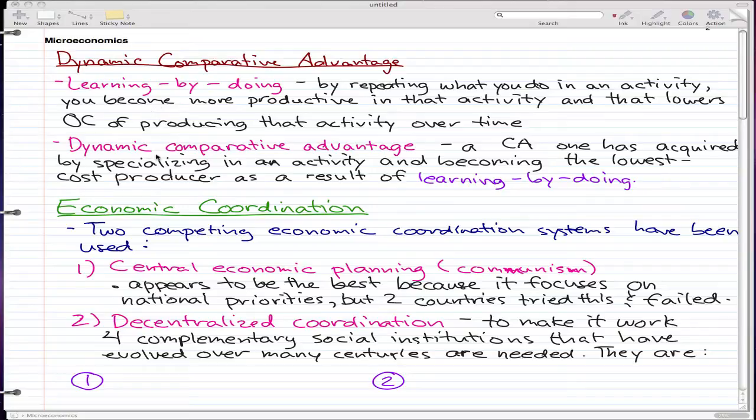We're going to start with two definitions: learning by doing and dynamic comparative advantage. Learning by doing is where we're repeating what we do in an activity, and because we're repeating, we become more productive in that activity. Over time, as we get better, that will lower the opportunity cost of doing that activity. Repetitive experience makes you better and better, lowering the opportunity cost.